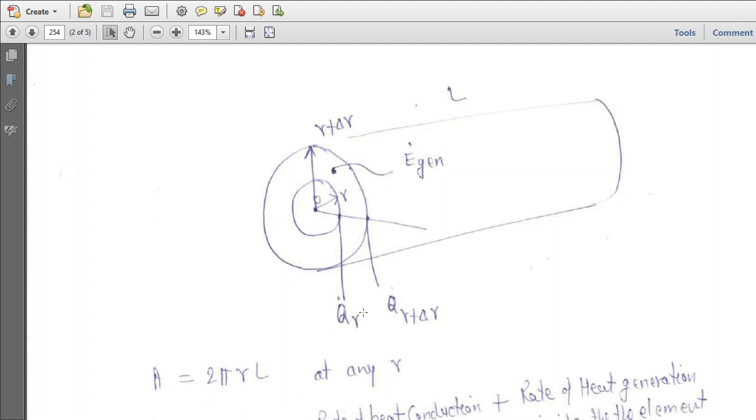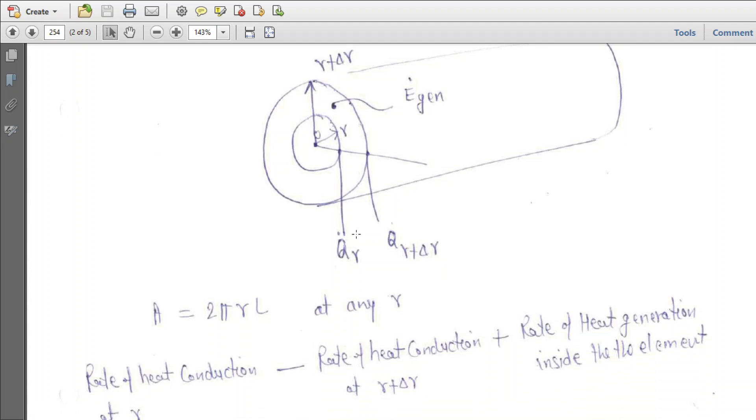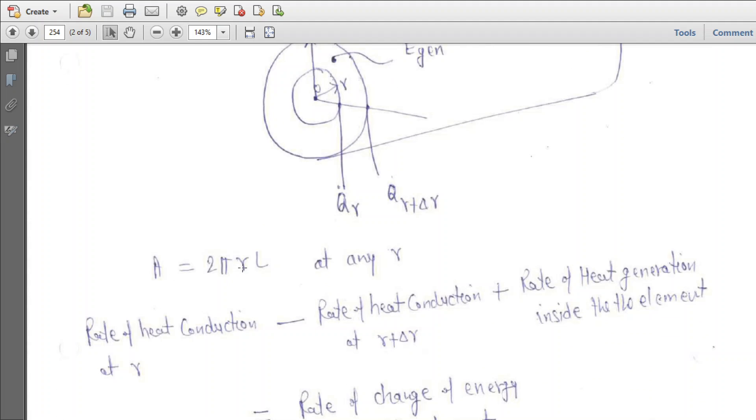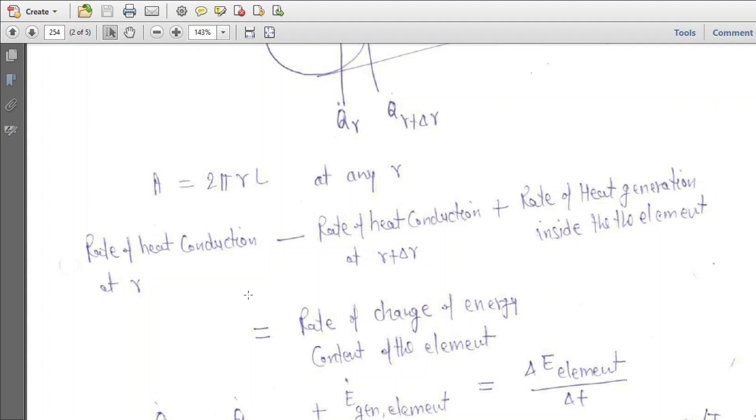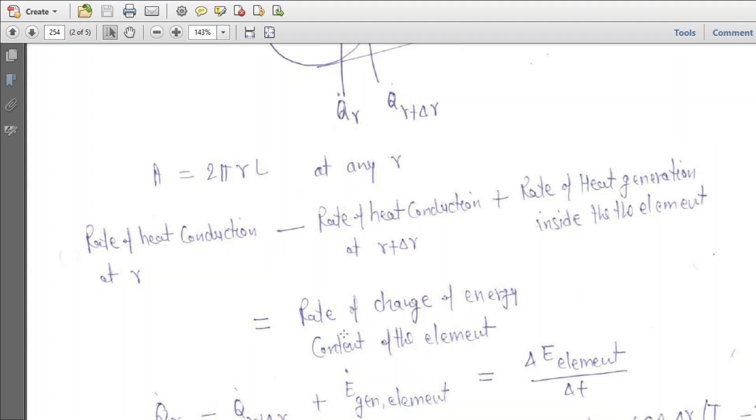Rate of energy in at R minus rate of energy out at R plus delta R, plus energy generated within the material, equals accumulation. The area is 2πRL at any R. So rate of heat conduction at R minus rate at R plus delta R equals rate of heat generation, which equals rate of change of energy contained in the element.